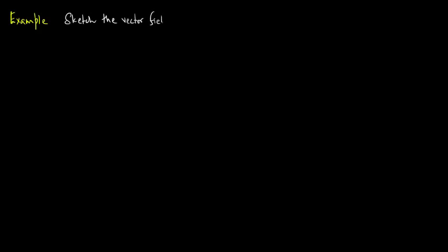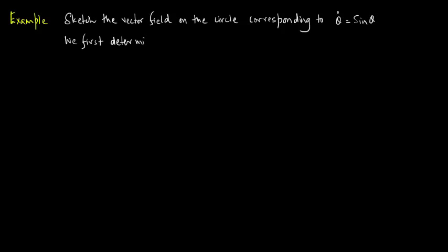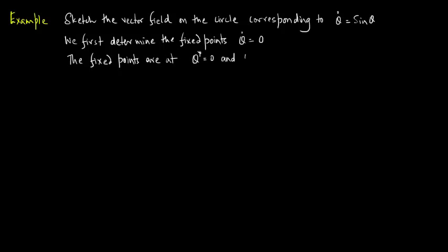Now let us consider an example. Sketch the vector field on the circle corresponding to theta-dot is equal to sin(theta). We first determine the fixed points by putting theta-dot equal to zero. The fixed points are at theta-star equal to zero and theta-star equal to pi. So, we plot the circle and highlight theta-star equal to zero and theta-star equal to pi.